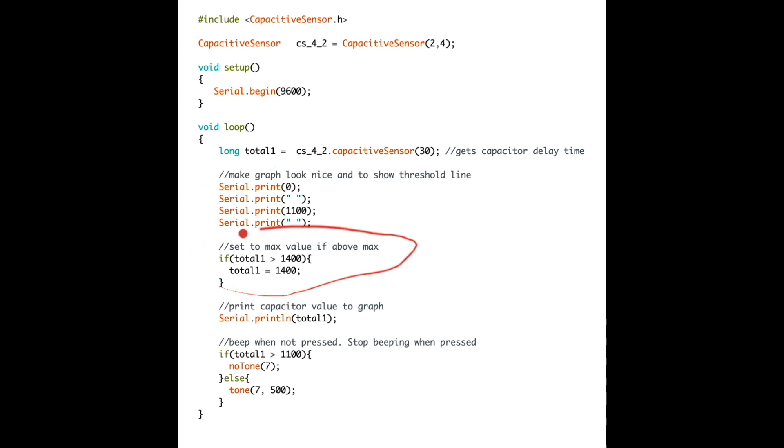This block of code prevents inconsistencies and maxes total1 at 1400 so the graph looks smoother. This line just prints total1 to the graph. And this piece of code turns on the buzzer when I am not touching the plate, telling me to get back to work. It turns off the buzzer when I am touching the plate, or total1 is greater than 1100.